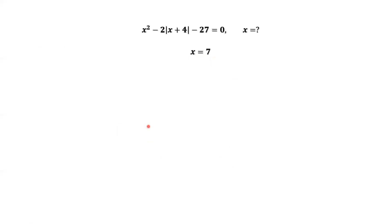We consider the second situation. x less than negative 4. x less than negative 4. The inside part is negative. If we want to get rid of the absolute value sign, we have to put the negative in front.